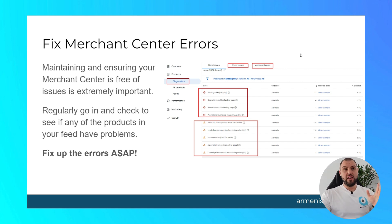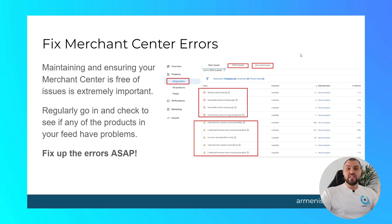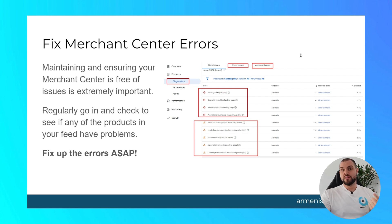Any red issues in particular — red is bad. Orange is not good, but sometimes you can't get rid of some orange ones, particularly in higher risk categories. Fix as many as you possibly can. If you can't fix them, use a supplemental feed to try. Otherwise, contact an expert on Fiverr, Upwork, or a contractor to help. If your ads aren't showing, how can you expect to make sales? This is the most important thing.